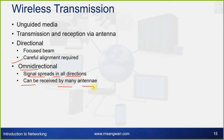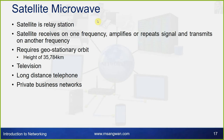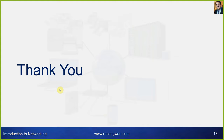Terrestrial microwave uses a parabolic dish for a focused beam, line-of-sight transmission, for long-haul telecommunications. Higher frequencies give higher data rates. Satellite microwave: the satellite acts as a relay station, receiving on one frequency, amplifying, and retransmitting on another frequency. It requires a geostationary orbit at a height of 35,784 kilometers, and is used in television, long-distance telephony, and private business networks.